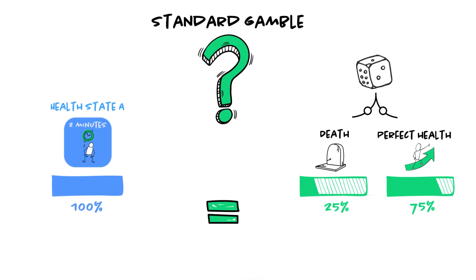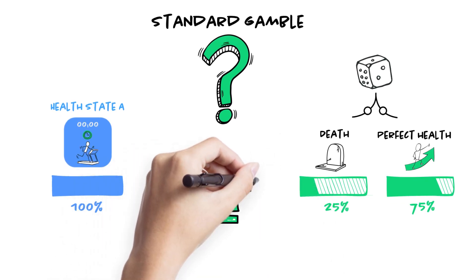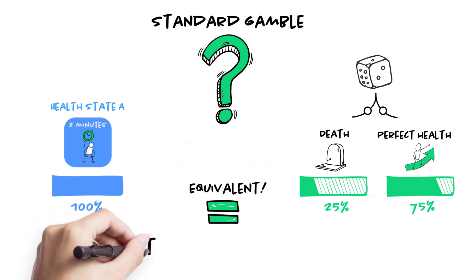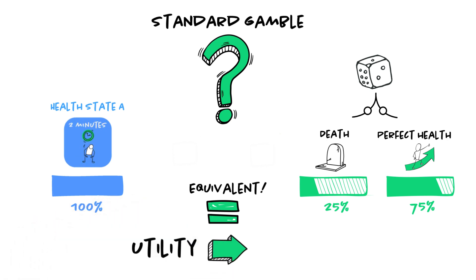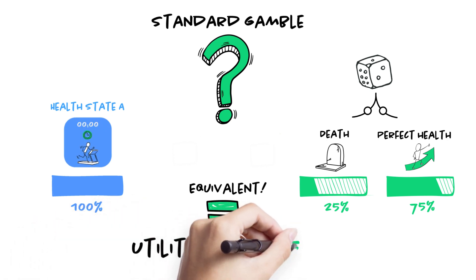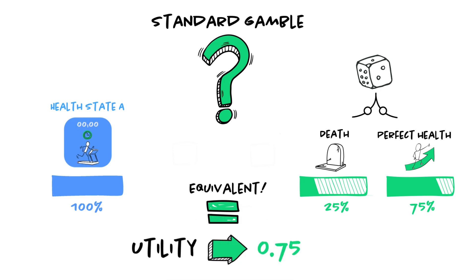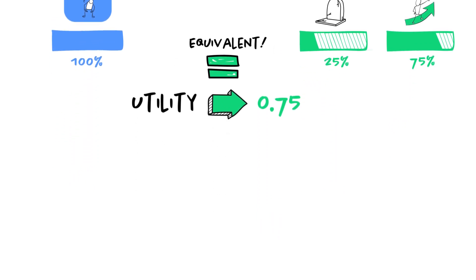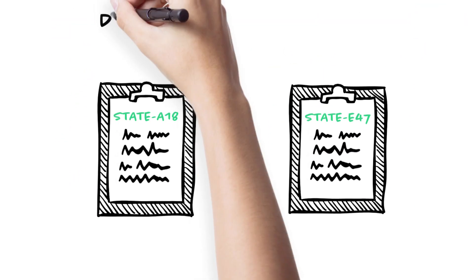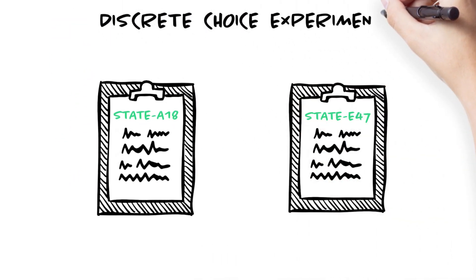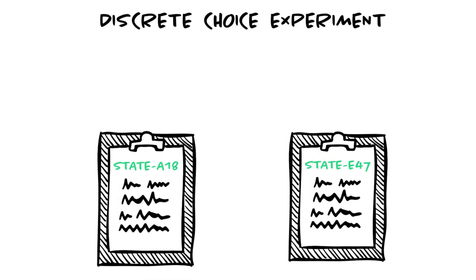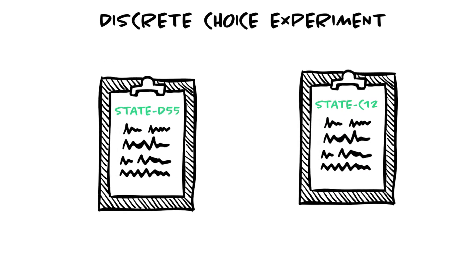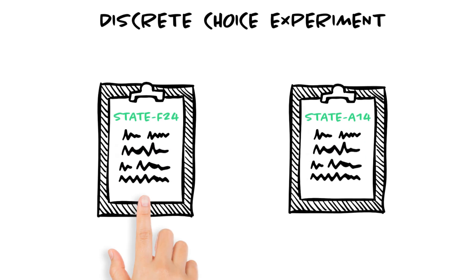If we assume that an individual is ready to consider 100% chance in health state A equivalent to a 75% chance in perfect health state, then, as perfect health state is equal to utility 1, health state A utility will be equal to 0.75. In addition to these three methods, we can also use discrete choice experiments, which involves making choices among pairs of health states or life scenarios. This method is sometimes combined with the TTO.